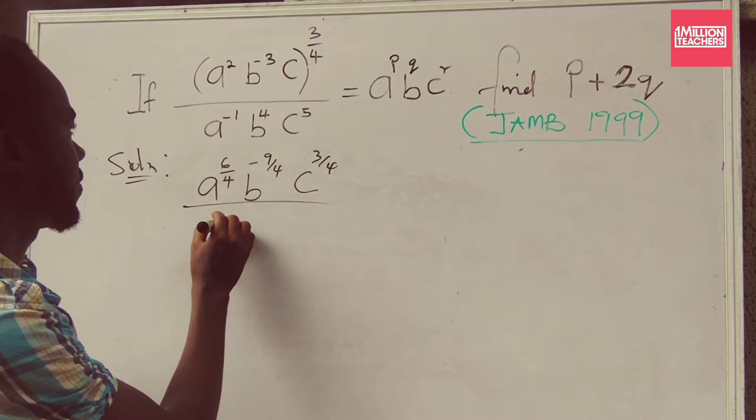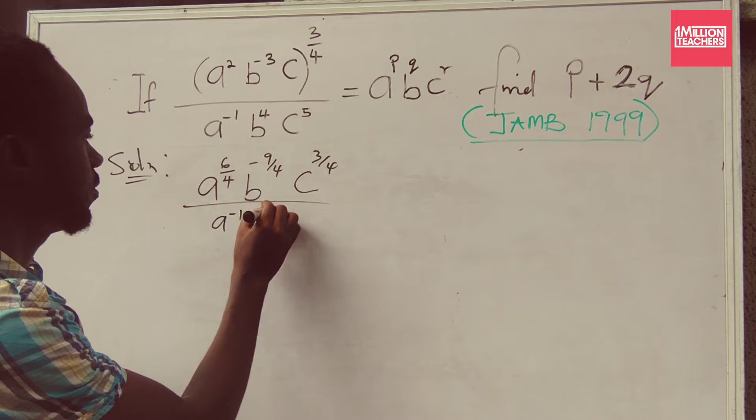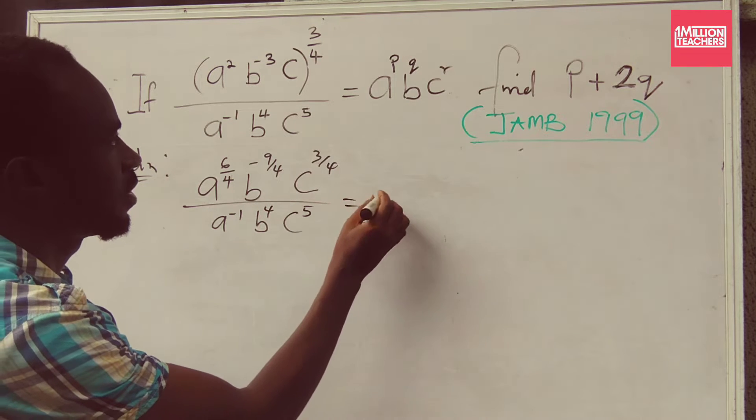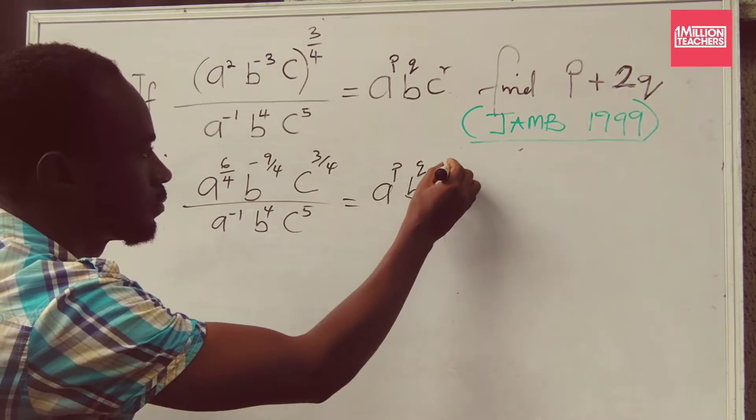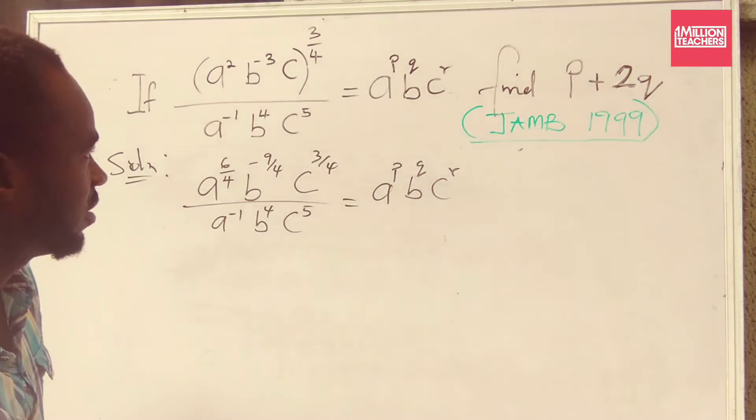All over A to the power of minus 1, B to the power of 4, C to the power of 5. I'm still going to write down this one. You get that.